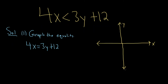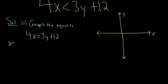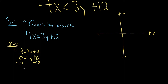You can find the intercepts by setting each variable equal to 0. If you set x equal to 0, that gives you the y intercept. So 4 times 0 equals 3y plus 12, which means 0 equals 3y plus 12. Subtracting 12 from both sides gives negative 12 equals 3y, and dividing by 3 gives y equals negative 4. So when x is 0, y is negative 4 — go right 0 and down 4 units.